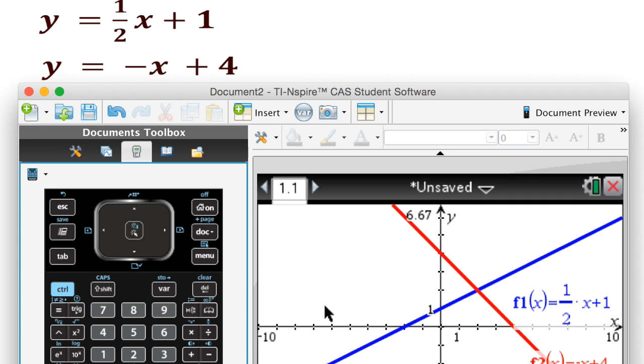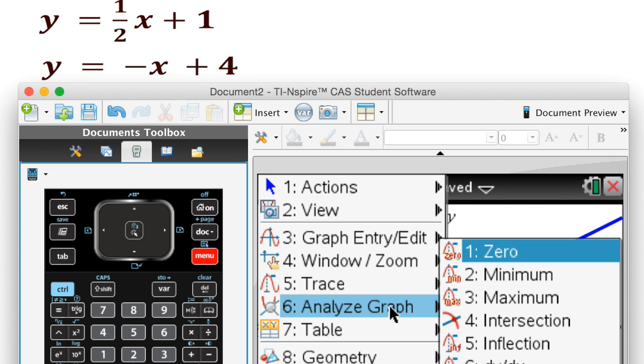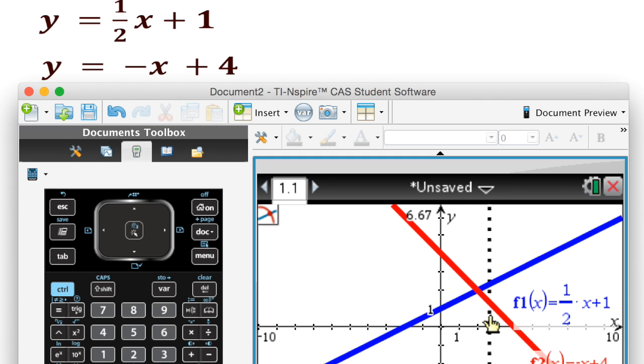I can see that they intersect right here. So what I'm going to do now, in order to find that intersection, is I'm going to hit menu. Option 6 is analyze graph, and I'm looking for the intersection. I'm looking for this spot right here where they cross.